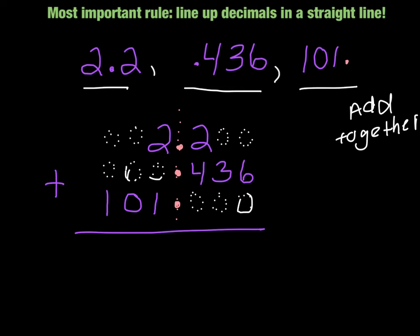Here we go. Zero and six and zero. That's a six. Zero plus three plus zero is a three. Two and a four is a six plus a zero. Two plus zero and a one is a three. Notice I just skipped over the decimal point for now. That's a zero.